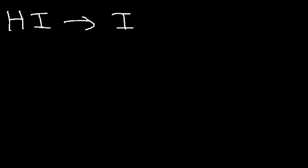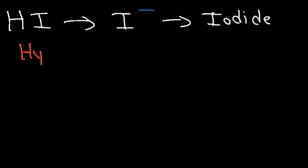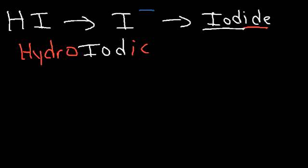How would you name the acid HI? HI contains the monatomic ion iodide. So we need to add the prefix 'hydro-', then write 'iod-', and replace the '-ide' part with '-ic'. So it's hydroiodic acid.